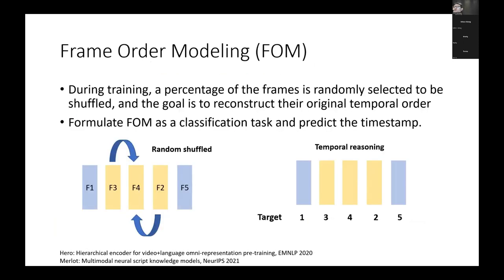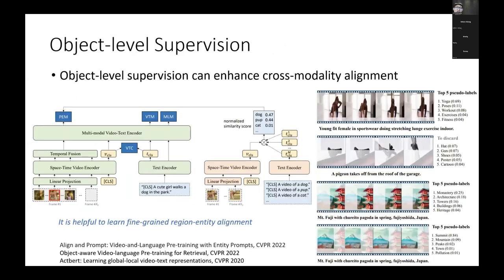There are also other interesting modeling approaches that teach the model to learn temporal information. For example, researchers tried frame order modeling: input frames are randomly shuffled and the model is asked to predict the timestamp of each frame. Recently, many papers have tried to further enrich supervision in video-language training by leveraging object-level supervision.